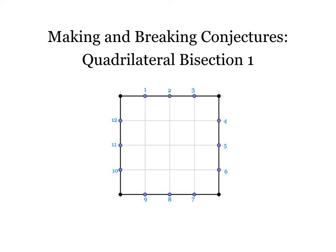Dan here with the next in the making and breaking conjecture series. This is quadrilateral bisection one, one of my favorite problems ever, and it's so strange because it starts with just such a very simple and common thing which is this four by four square.